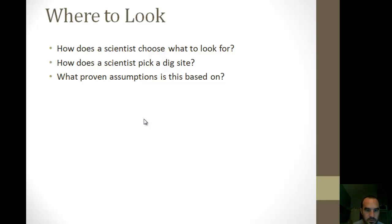In the first part, I want to think about what Shubin as a scientist was looking for, and what he was thinking about before he chose his place to search for fossils. There are a couple of questions: How does a scientist choose what to look for? How do they pick a dig site? And what proven assumptions is this based on?